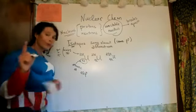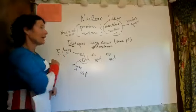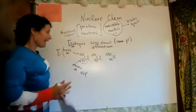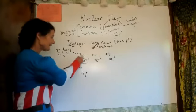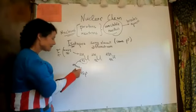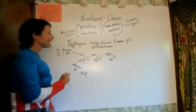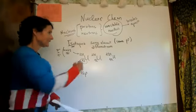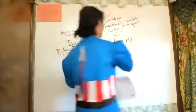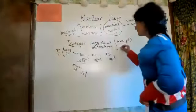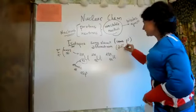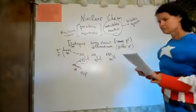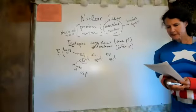You'll need your periodic table a lot because we're going to be going back to the protons. If you subtract the atomic number from the mass number, you get the neutrons. Each isotope has a different mass because they have a different number of neutrons.